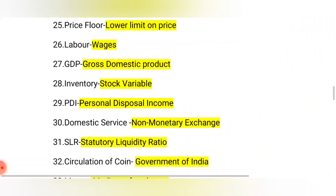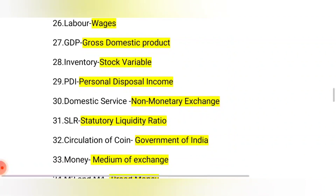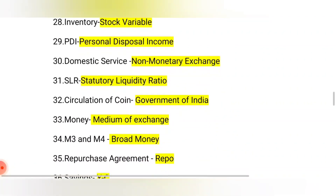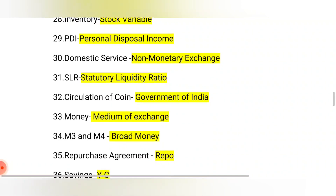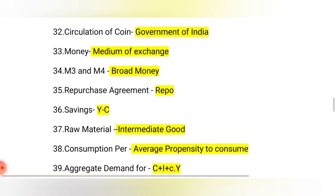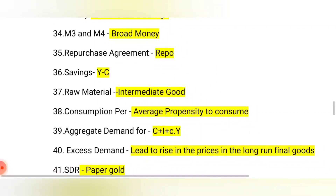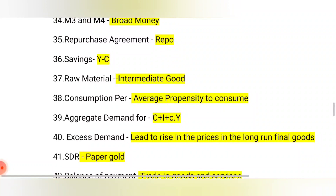GDP is gross domestic product. Inventory is all about stock. PDI is personal disposable income. Domestic service is a non-monetary exchange. SLR is statutory liquidity ratio. Circulation of coins is done by the government in India. Circulation of currency is done by the RBI. Money is a medium of exchange. M3 and M4 are broad money, while M1 and M2 are narrow money. Repurchase agreement is known as repo.